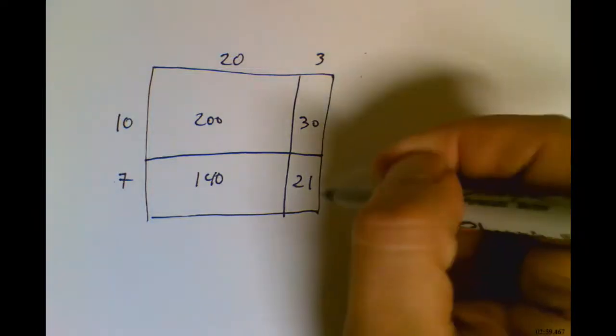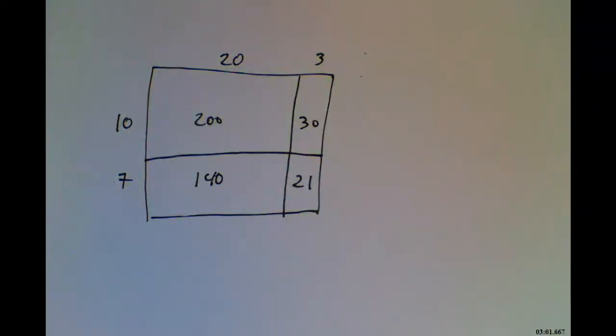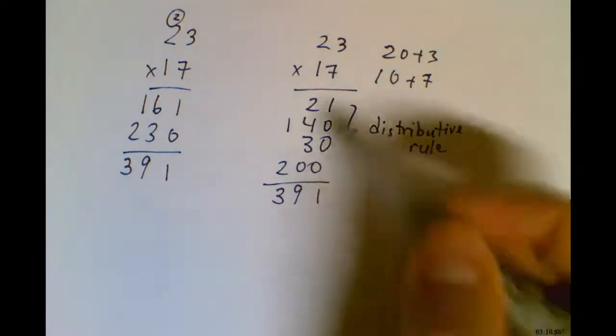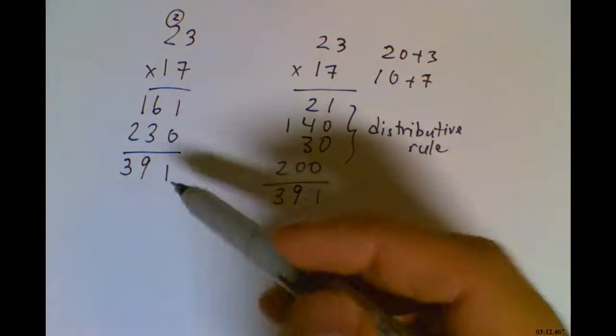The last advantage of this method is I could potentially break it up in different ways, depending on what multiplication facts I remember. The point against it is that it's less efficient. It takes more steps to do this method than it does this method.